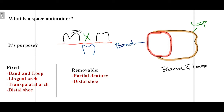In order to prevent this malalignment, a space maintainer is required. A space maintainer basically maintains the space as it is, preventing the mesial migration of the surrounding teeth, so that the permanent tooth — the blue one — that is supposed to erupt in its position doesn't get malaligned and erupts in the correct alignment. That's why a space maintainer is required.